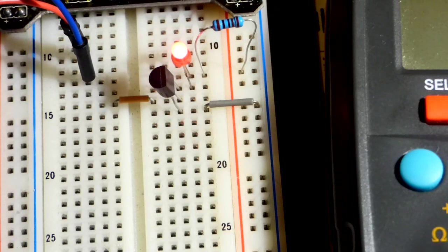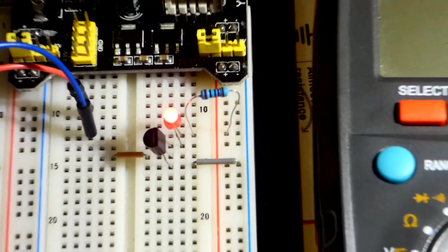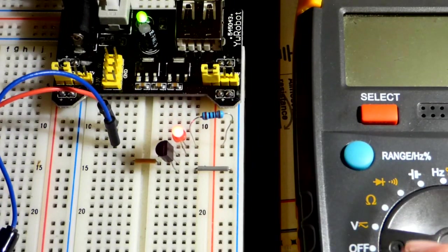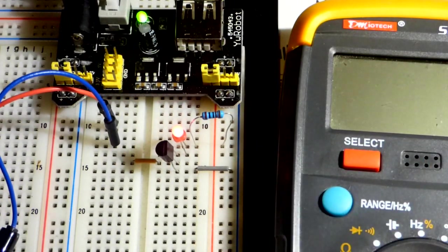So in any case, we will turn it on. And now you can see the breadboard power supply. So now you can see the LED is already on. So this transistor is normally on.